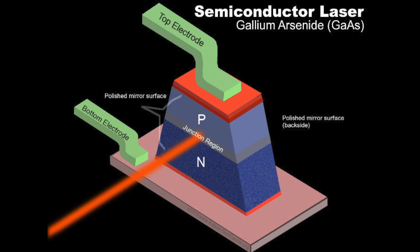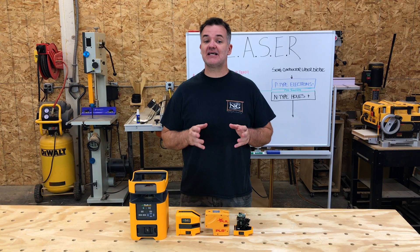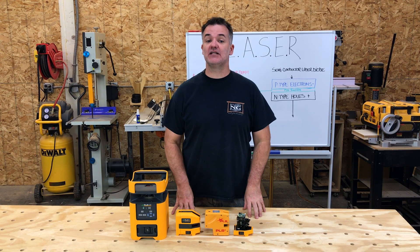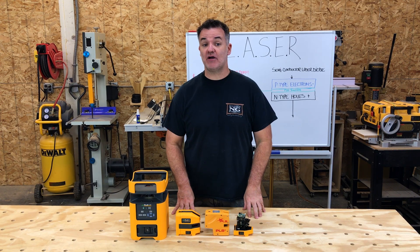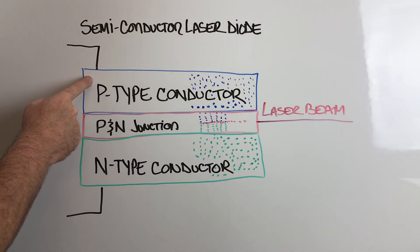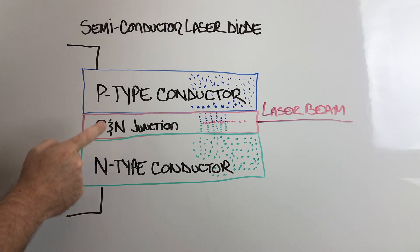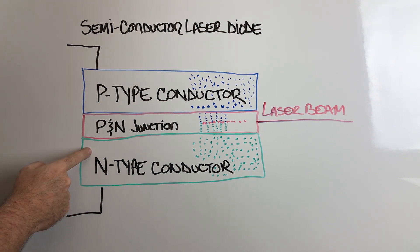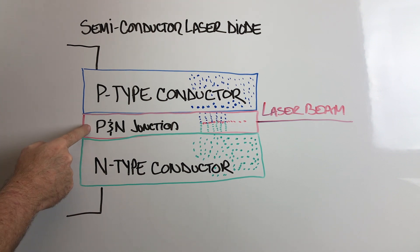Now let's look at the semiconductor laser. In a semiconductor laser diode you have three parts: a p-type conductor, which has a lack of electrons replaced by holes and is positively charged; the n-type conductor, which has an excess of electrons and is negatively charged; and the p and n junction in the middle.